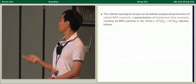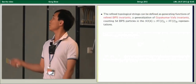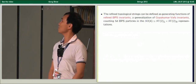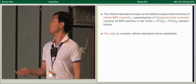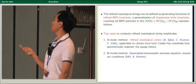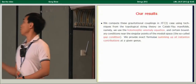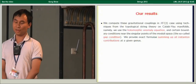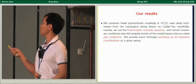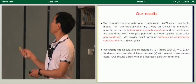Nekrasov's partition functions are related to topological string on Calabi-Yau three-folds by geometric engineering. In topological string, there is a perturbative expansion in the genus of the worldsheets. Here we have two expansion parameters of the omega background. Motivated by gauge theory calculations, one tries to refine the topological string to include two-parameter expansions — this is the so-called refined topological string theory, defined as generating functions of refined BPS invariants, which generalize the well-known Gopakumar-Vafa invariants and count 5D BPS particles.